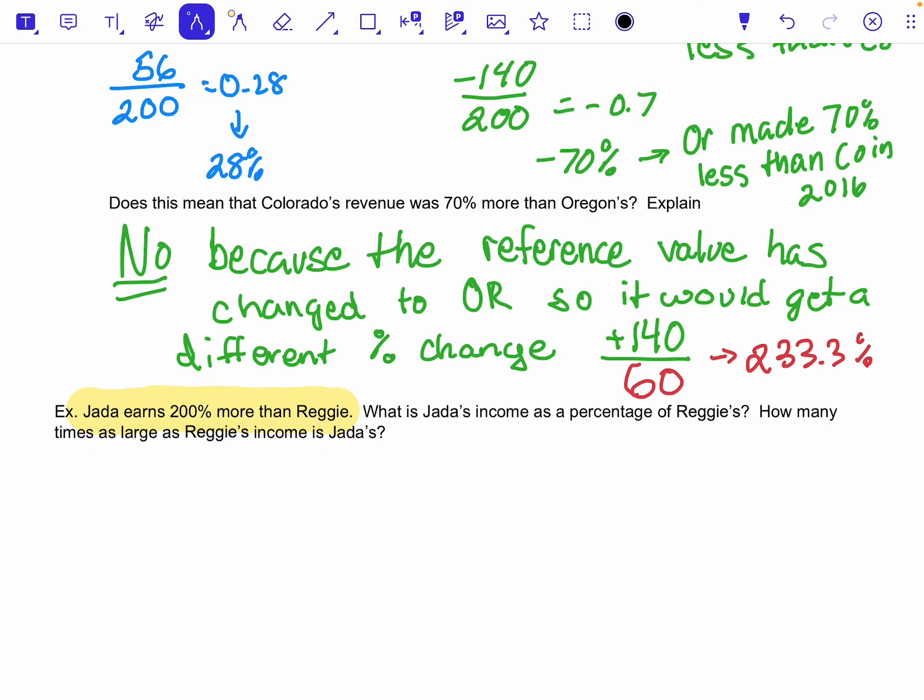And so you almost want to think about it as if I wanted to know how much Jada earned. We're just going to say Jada, I would find that by basically taking however much Reggie earns, and I would have sort of the 100%. So I'm going to need to give myself, I'm going to take my, I'm going to change how I write this. I'm going to take how much Reggie earned.